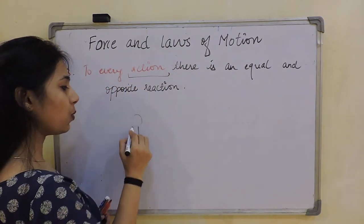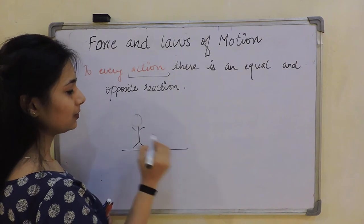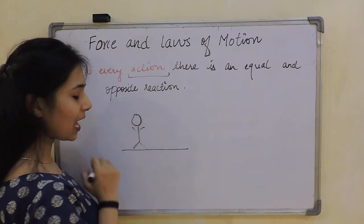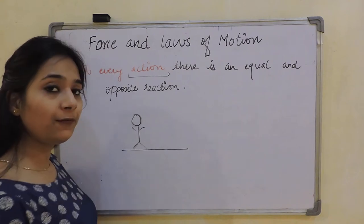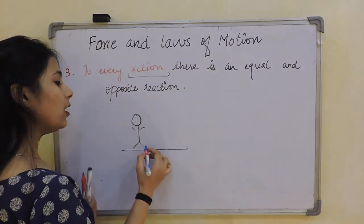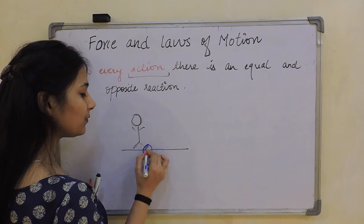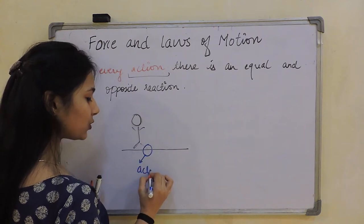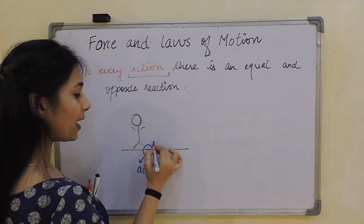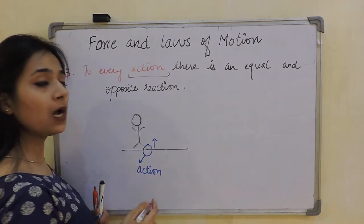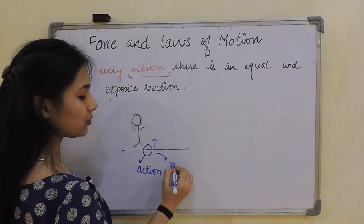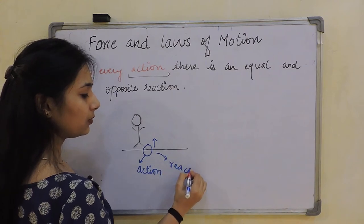Now when a person is walking — I am not so good at drawing — when this person is walking, he is applying a force with his feet. You must have observed it. When the person applies this force, that is the action. And when the ground applies an equal and opposite force on this man, that is the reaction. Simple.